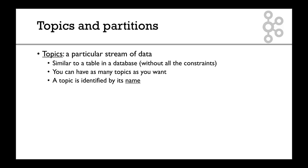A topic is basically a stream of data. The same way you have tables in databases, you have topics in Kafka. You can publish data to it. You can have as many topics as you want, the only thing is that they have to have different names, because the topic is identified by its name.